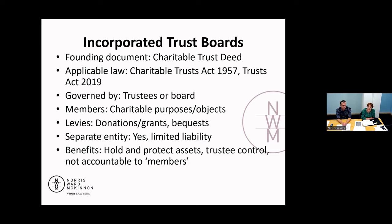Trustees must act unanimously normally, so if all the trustees can't agree on a decision, then you're at a stalemate — although your trust deed can change that and say that decisions, for example, could be by a majority. In an incorporated trust board, there would normally be some sort of process around how decisions are made where you've got a large number of trustees and it would be impossible to have unanimous decisions. But that's the default situation: trustees' decisions must be unanimous.